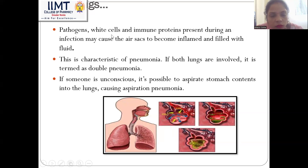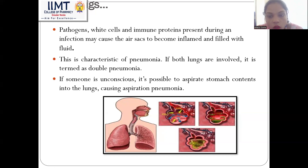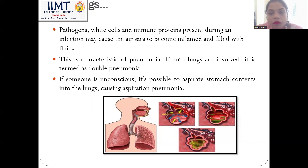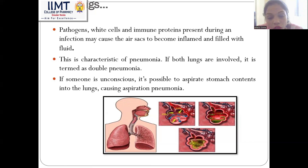When pathogens, white cells, or immune proteins present during an infection may cause the air sacs to become inflated or filled with fluid, this is characteristic of pneumonia. If both lungs are involved, it is known as double pneumonia. If someone is unconscious, it is possible to aspirate stomach contents into the lungs, causing aspiration pneumonia.